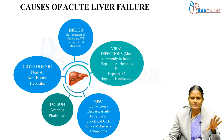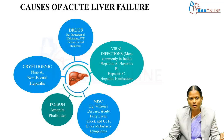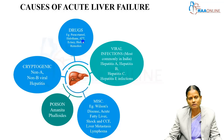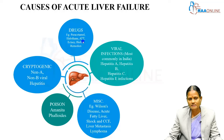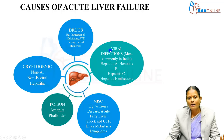This slide shows the causes of acute liver failure. Drugs — of which paracetamol, which is an over-the-counter drug, halothane, anti-tuberculous drugs, and other herbal remedies are included. Viral infections are the other major cause of acute liver failure, which we have seen in detail.